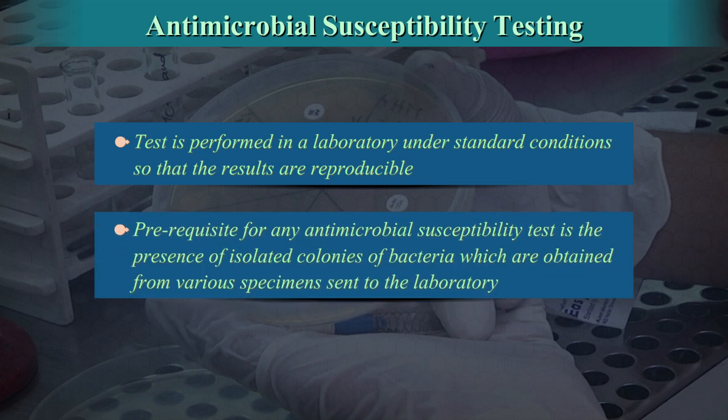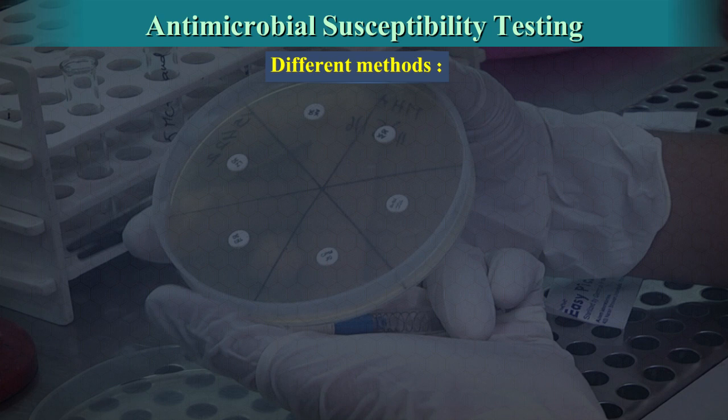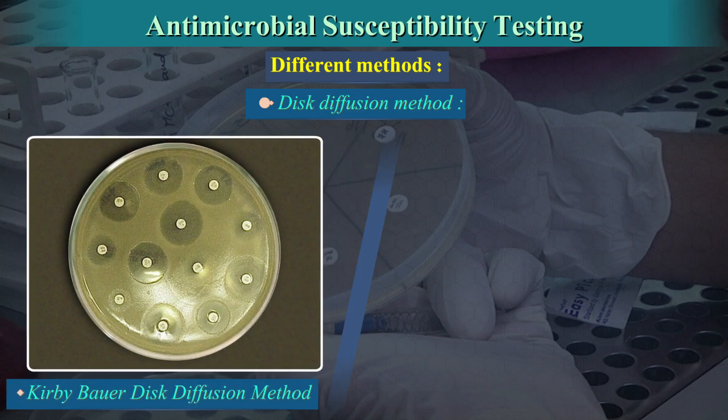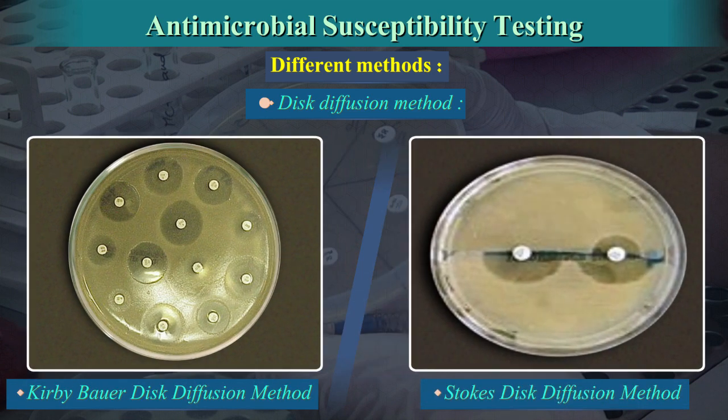The prerequisite for any antimicrobial susceptibility test is the presence of isolated, pure colonies of bacteria of interest from clinical specimens. The different methods used to perform antimicrobial susceptibility testing include the Disc diffusion method, which can be classified as the Kirby-Barr disc diffusion method and the Stokes disc diffusion method.